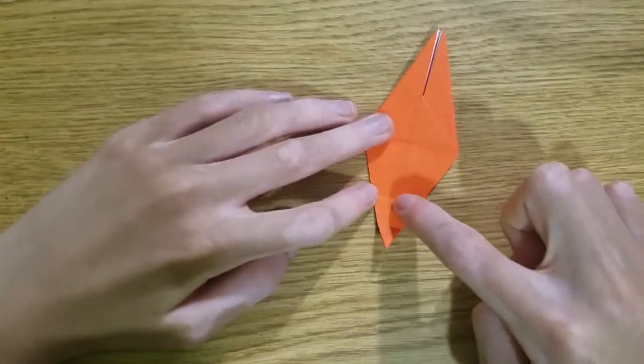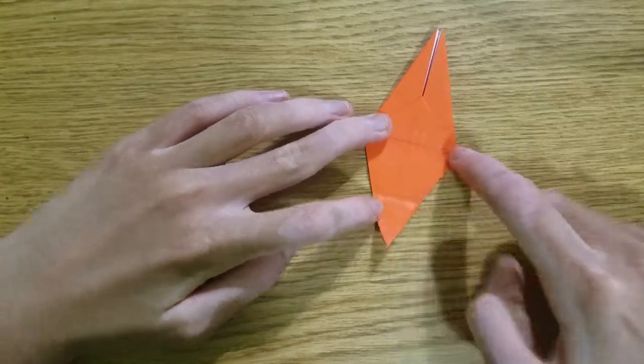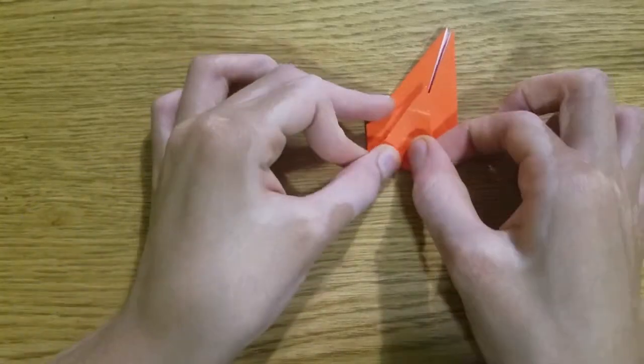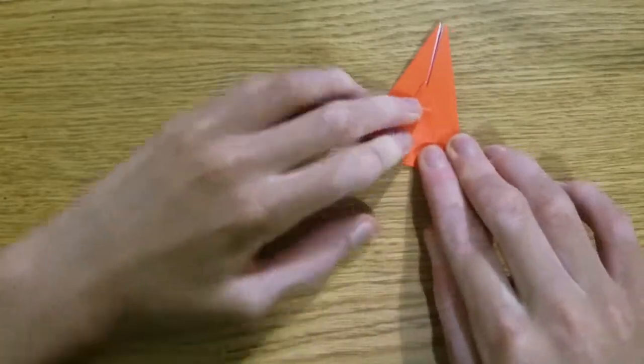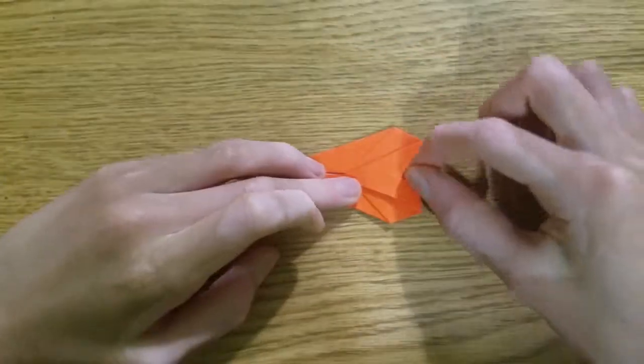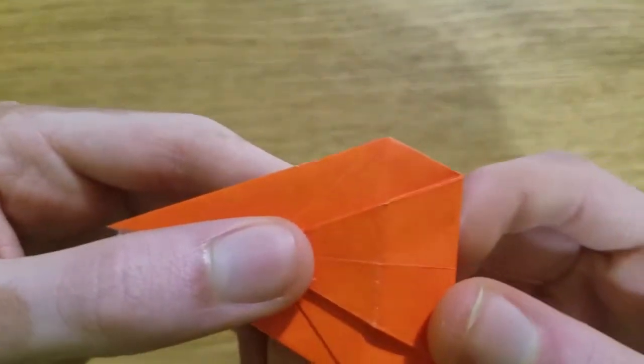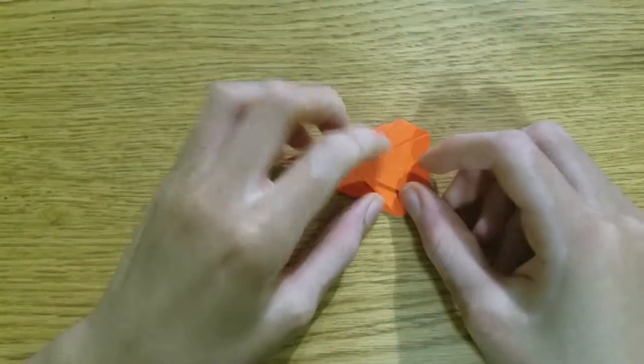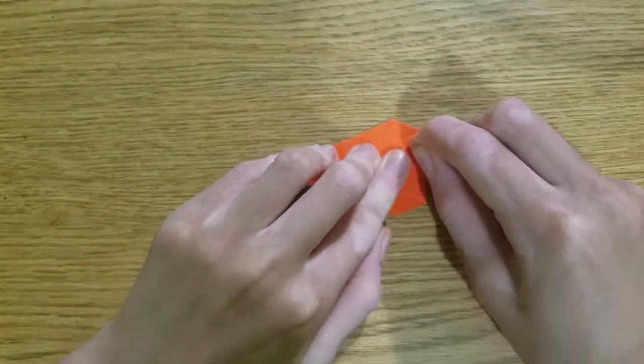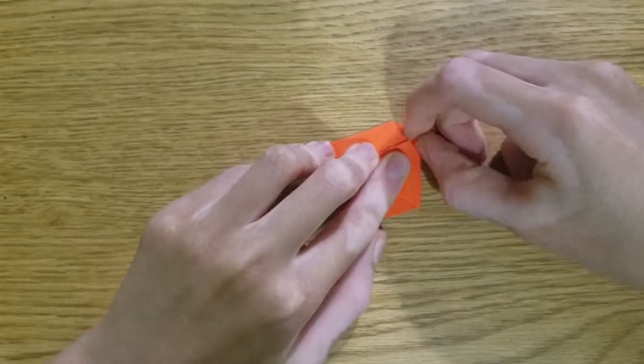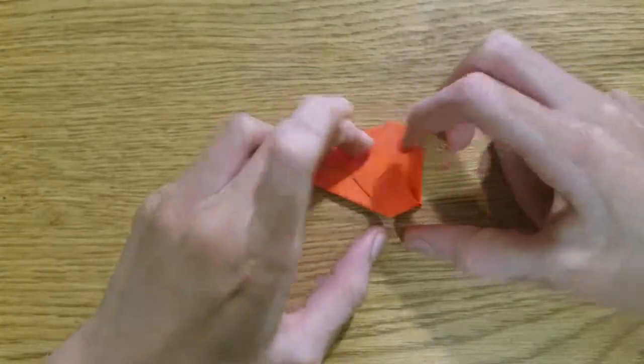Then we're going to fold this edge to this crease. Make sure it lines up, just like that. Crease sharply, and unfold.